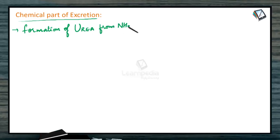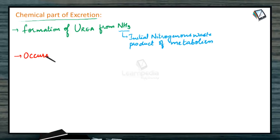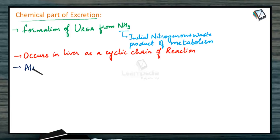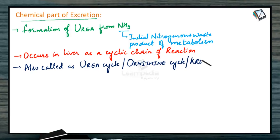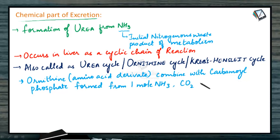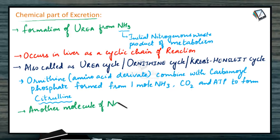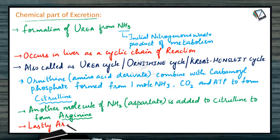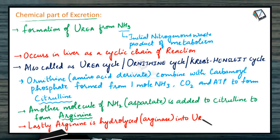Chemical part of excretion: it mainly involves the formation of urea from ammonia, the initial nitrogenous waste product of metabolism. This occurs in the liver as a cyclic chain of reactions — the urea cycle, ornithine cycle, or Krebs-Henseleit cycle. Ornithine combines with carbamoyl phosphate (formed from 1 mole of ammonia, carbon dioxide, and ATP) to form citrulline. Another molecule of NH₃ or aspartate is added to citrulline to form arginine, which is then hydrolyzed by arginase into urea and ornithine.